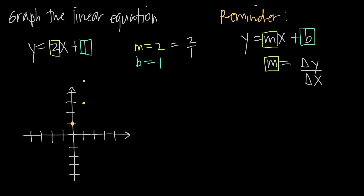We can do that again — go up 2 for y and over 1 for x, and plot another point. Keep in mind that positive 2 over positive 1 is also the same as negative 2 over negative 1, because both reduce to 2. This is convenient because we can also go negative 2 in the y-direction every time we go negative 1 in the x-direction. So we go down 2 along the y-axis and negative 1 toward the negative direction of the x-axis, plotting points in that direction as well.